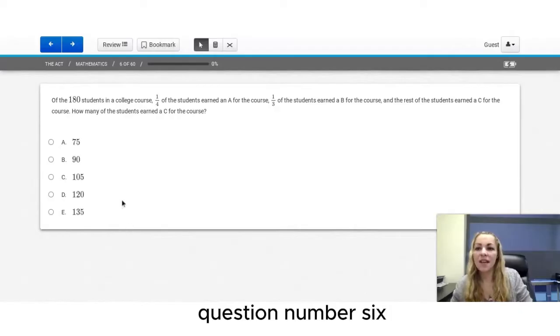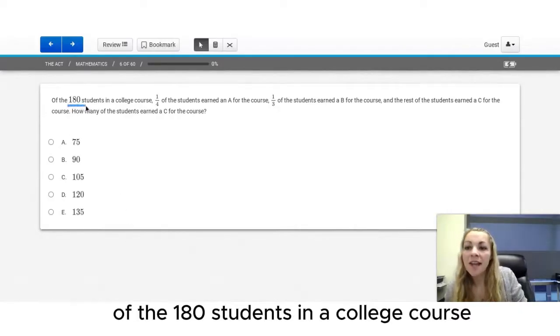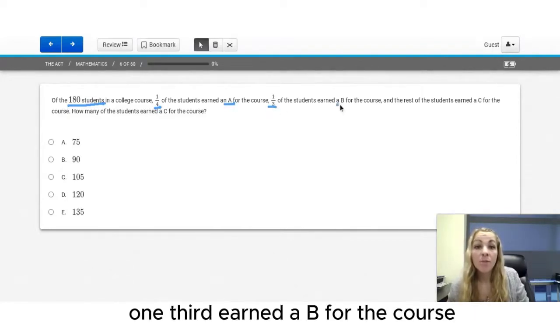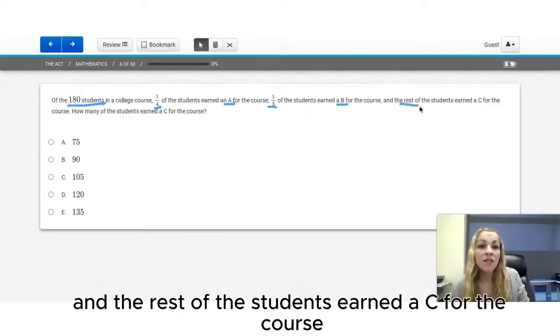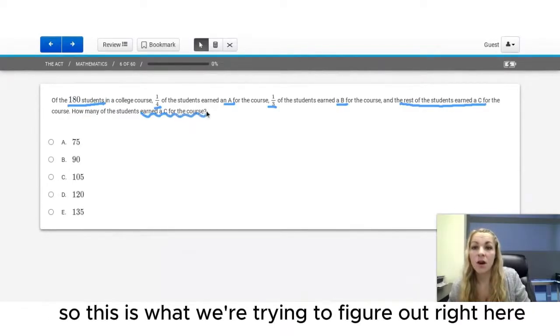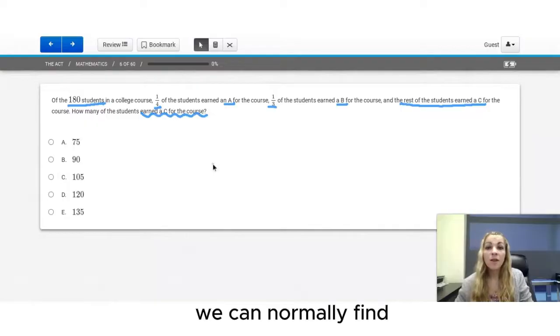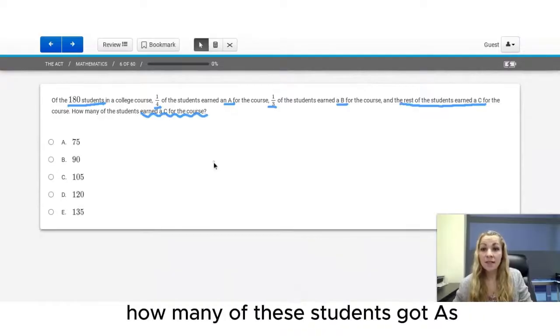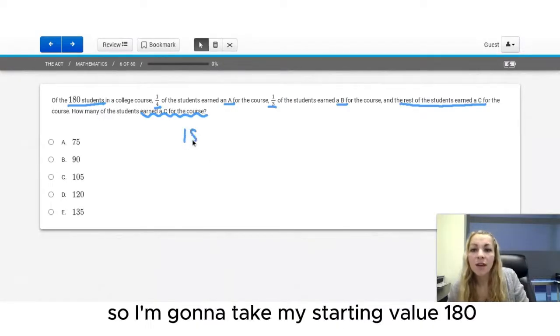Question number 6. Of the 180 students in a college course, one-fourth of the students earned an A. One-third earned a B for the course and the rest of the students earned a C for the course. How many of the students earned a C for the course? So this is what we're trying to figure out right here. We can normally find what we're trying to figure out in the last sentence.